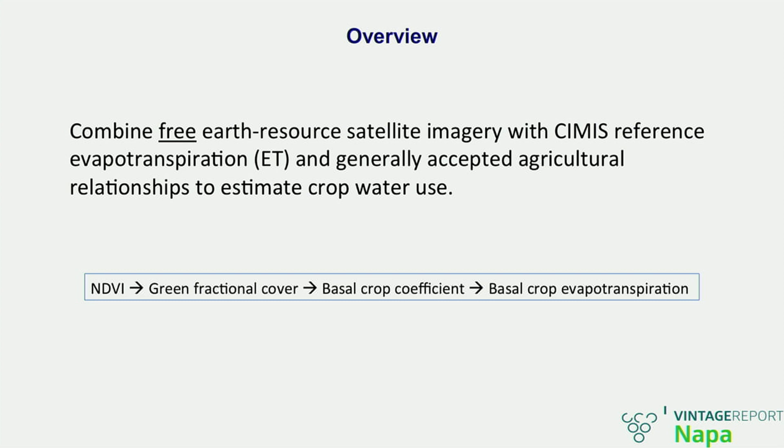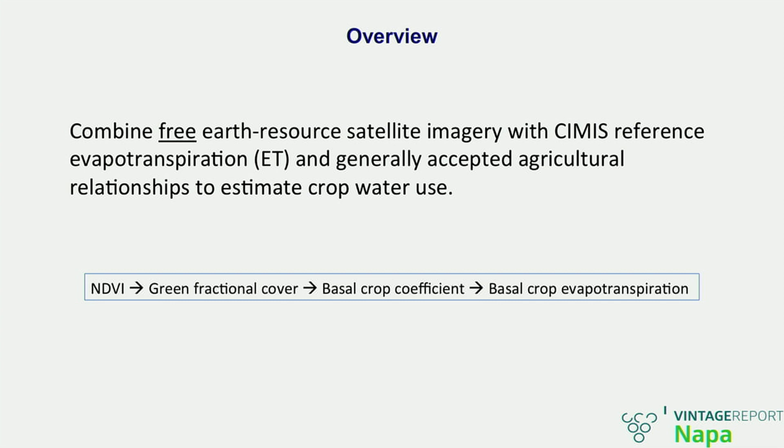What I'm going to talk about today is a proof-of-concept system that we've built as a result of grant-funded research funded federally by the NASA Applied Sciences Program as well as by DWR and various other state agencies. The idea here has been to combine free earth resource satellite imagery with CIMIS reference evapotranspiration, combining that with generally accepted agricultural relationships regarding crop water use estimation — most of those relationships coming out of the FAO 56 crop water requirement guidelines and various other equations that the agricultural engineering community has published over the last couple of decades.